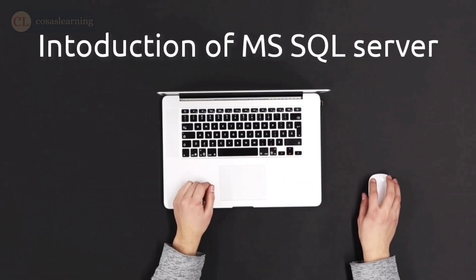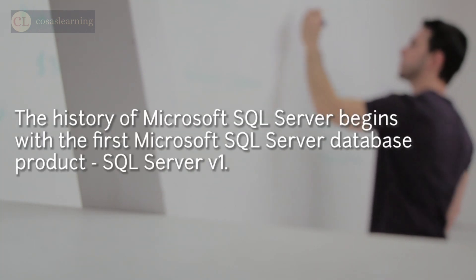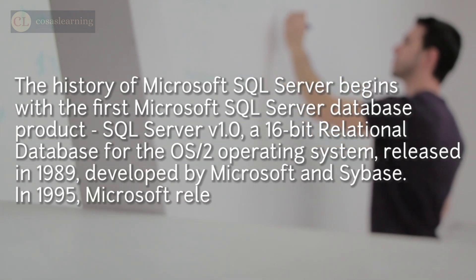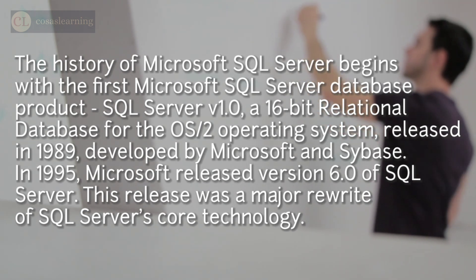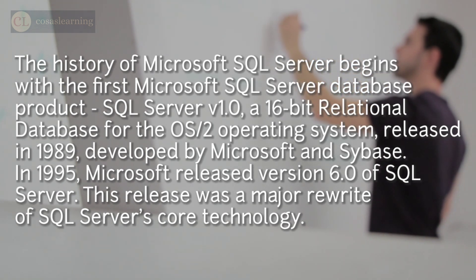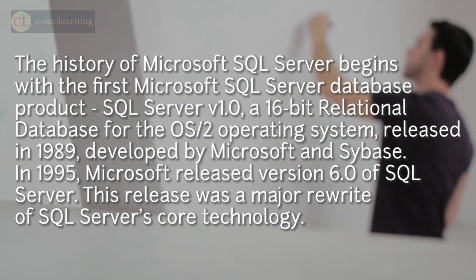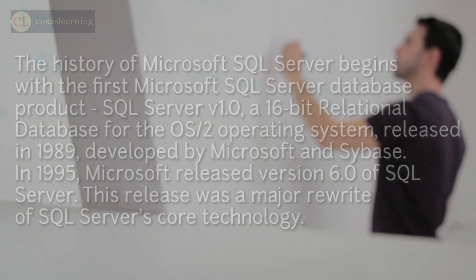Introduction of MS SQL Server. The history of Microsoft SQL Server begins with the first Microsoft SQL Server database product, SQL Server v1.0, a 16-bit relational database for the OS/2 operating system, released in 1989, developed by Microsoft and Sybase. In 1995, Microsoft released version 6.0 of SQL Server, which was a major rewrite of SQL Server's core technology.